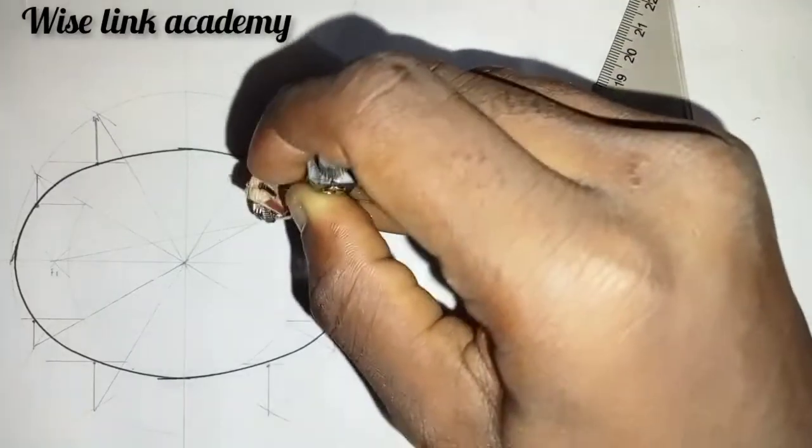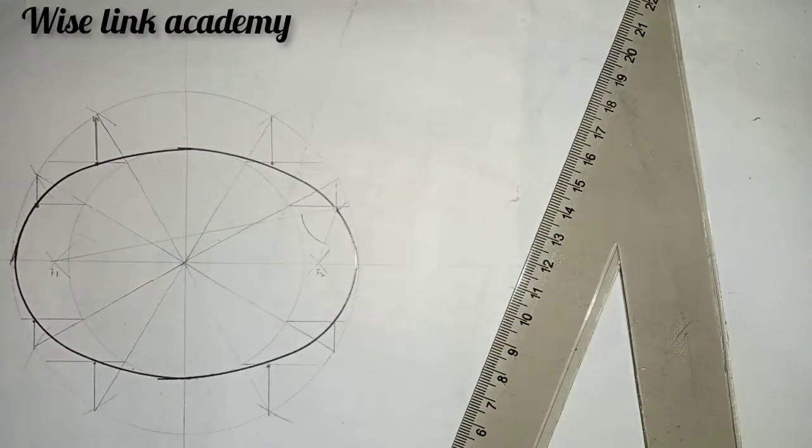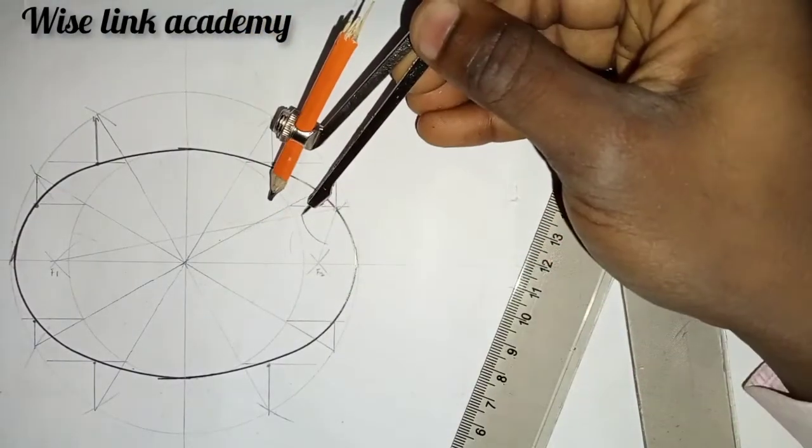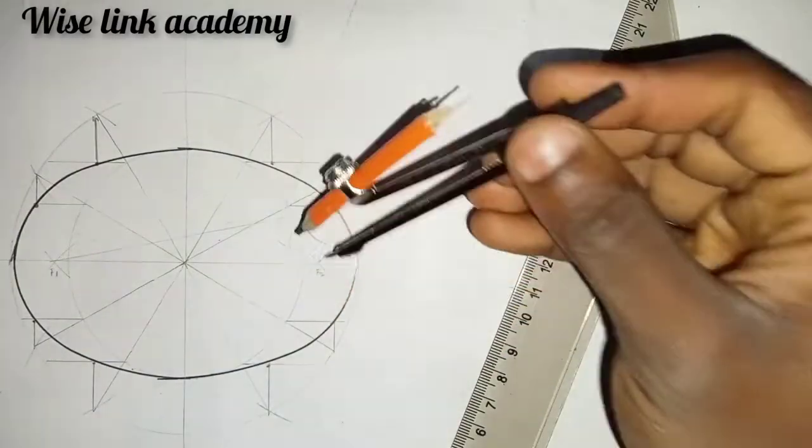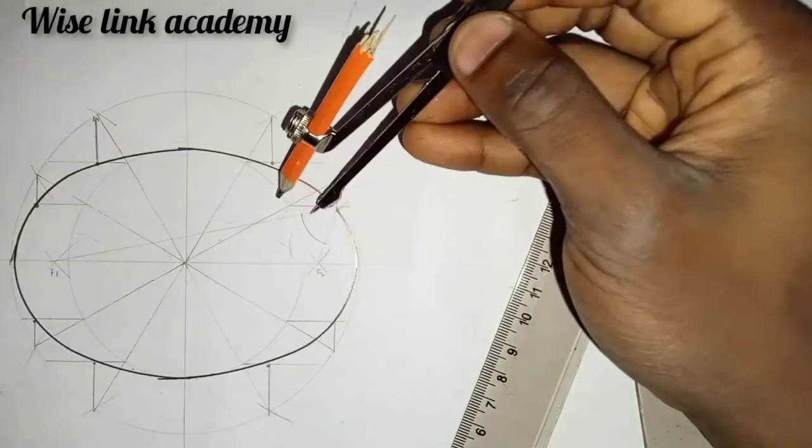You bisect it this way, then you come to this point here and arc here, come to this point here and arc here. Now where they meet in this area, at this point.